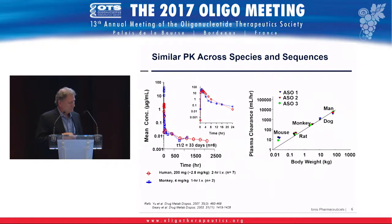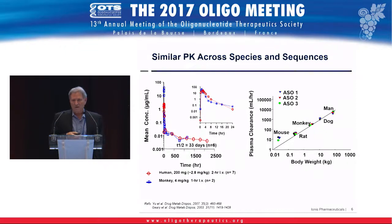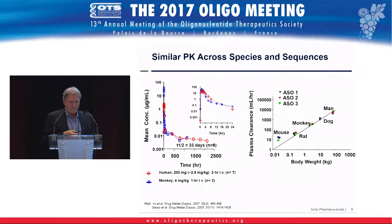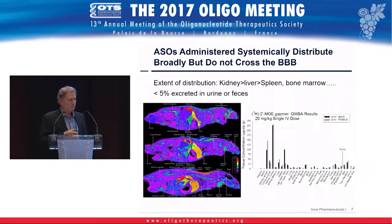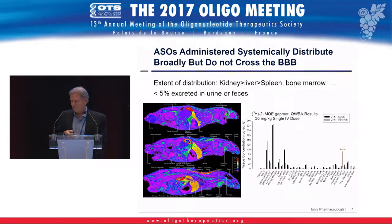Cross-species, the pharmacokinetics are very similar — from rat to man, pretty much one-to-one in terms of clearance. Looking at monkey versus man for IV and subcutaneous administration, the curves are essentially superimposable.